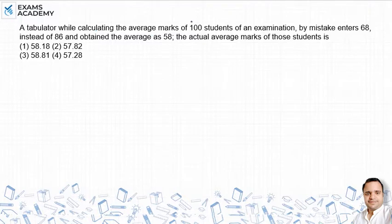कि average marks 100 students का जब निकाला जा रहा था तो गलती से 68 enter किया गया। 68 ले लिया गया लेकिन लेना क्या चाहिए था - number 86 लेना चाहिए था और average निकल के आया 58